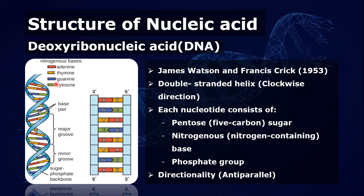Each nucleotide consists of, first, the pentose sugar. For DNA it's called deoxyribose; for RNA it is ribose only. The two sugars differ by the chemical group attached to the carbon — for DNA, only the hydrogen atom is attached, whereas for RNA, the hydroxyl group is attached. Next, we have the nitrogenous or nitrogen-containing bases. These have two classes: purines, which are nine-membered double-ring structures, and pyrimidines, which are six-membered single-ring structures. Lastly, we have the phosphate group, which is attached to the five-carbon of the sugar in both DNA and RNA.